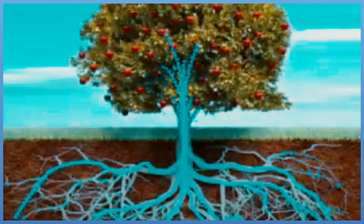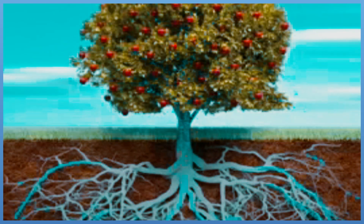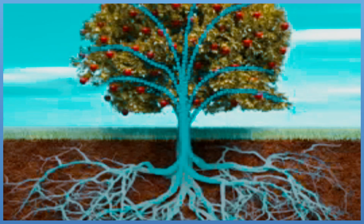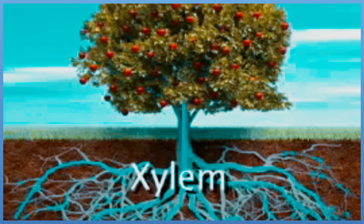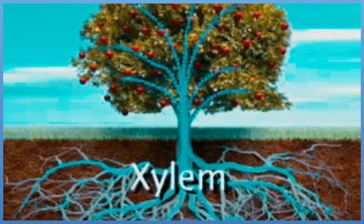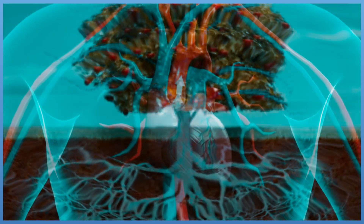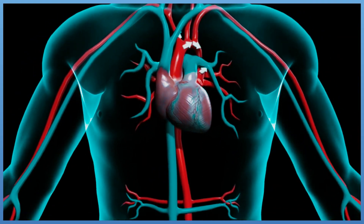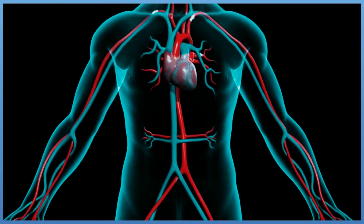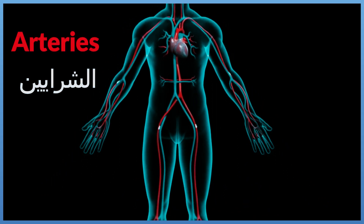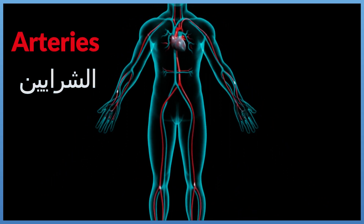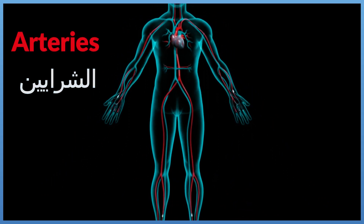Xylem tubes carry water and nutrients from the roots to the leaves. Arteries carry blood that is rich with oxygen and nutrients from the heart to all body parts.